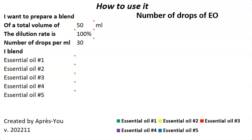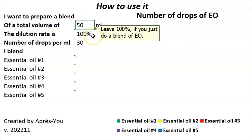Welcome to this presentation about the blending calculator, the VEP version of this calculator. I'm here to present how to use it — as you will see, it's very simple. First of all, in this calculator I will choose the volume of blend that I want, the total volume. You just have to click here and enter a number. I will say I want to do a bottle of 30 milliliters.